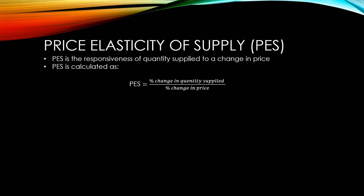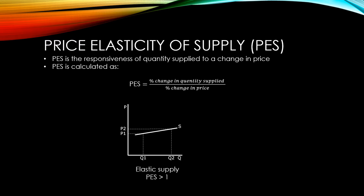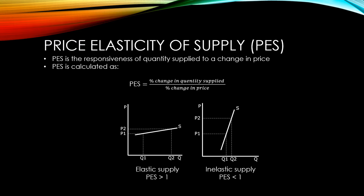Goods with elastic supply have a PES greater than 1. This means any change in price will result in a greater change in quantity. Goods with inelastic supply have a PES between 0 and 1, meaning any change in price will result in a smaller change in quantity supplied.